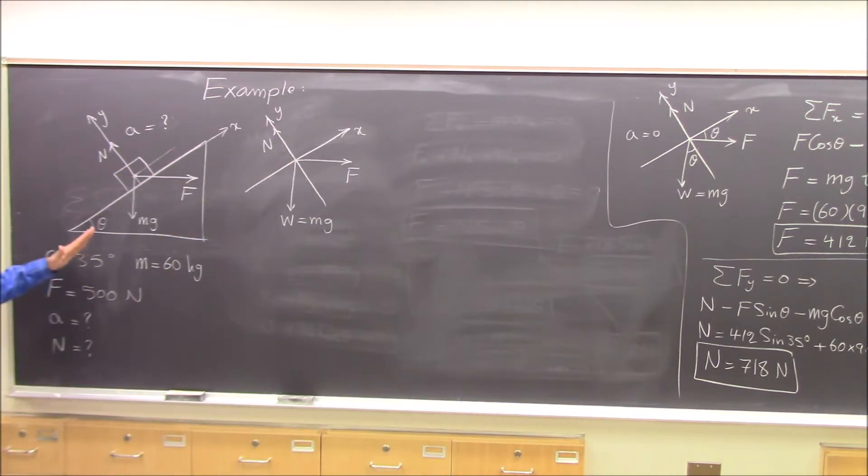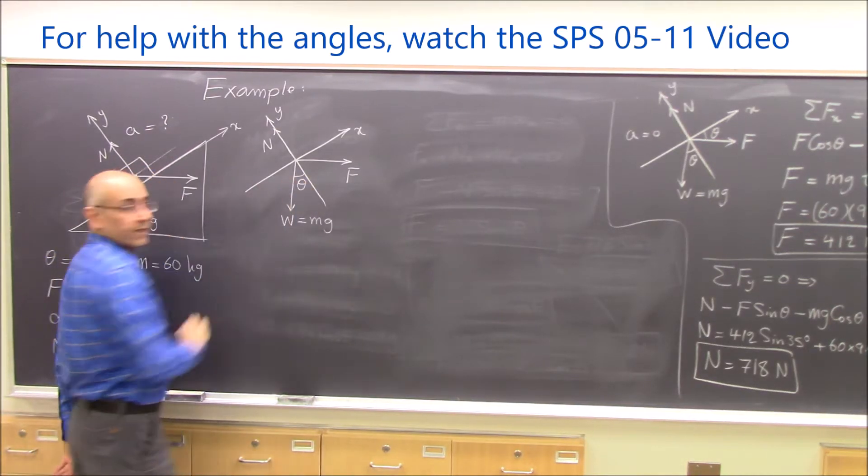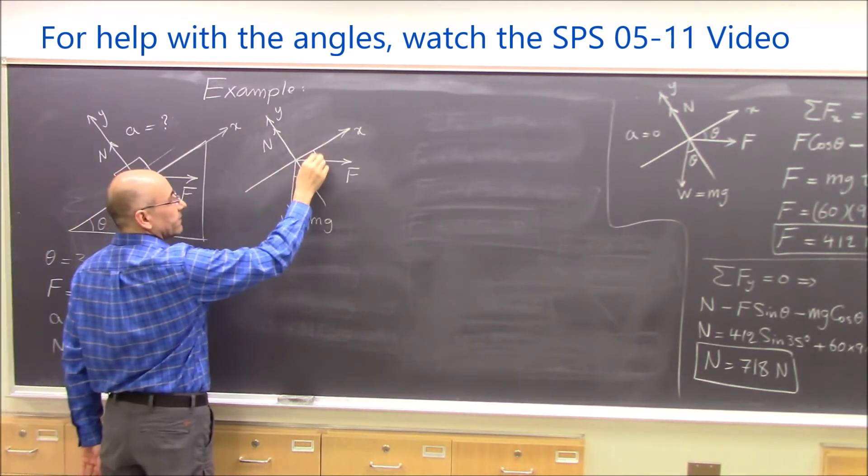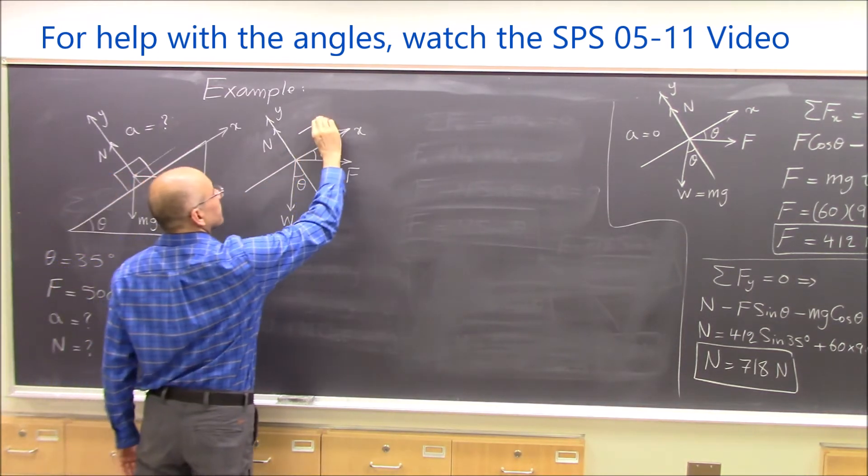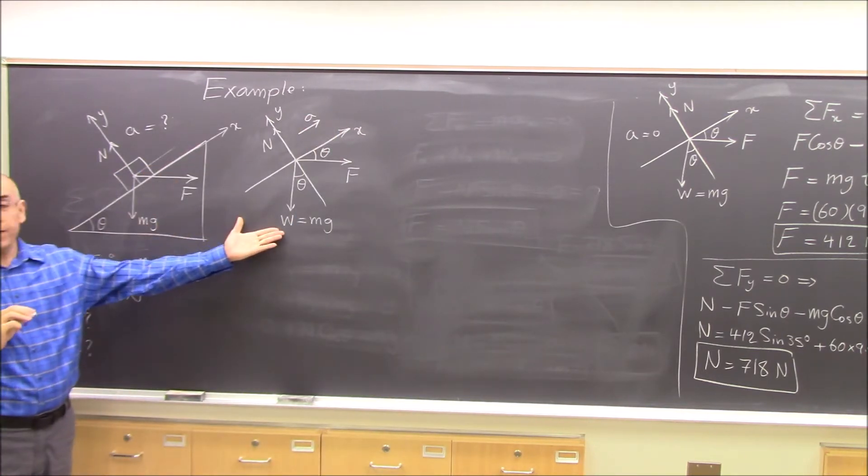And then again, Mg in the negative y-direction makes the angle theta, and F in the positive x-direction makes the angle theta, the same as what we had over there. And the acceleration is in this direction. So this is the free body diagram.